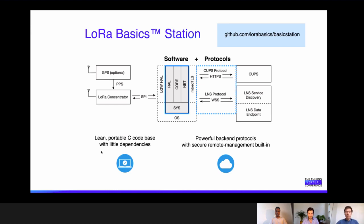Here we see an architecture diagram of how the Basic Station software fits into the picture. Reading left to right, we have the antenna and radio front-end hardware on the far left. Over SPI, this hardware is driven by a host platform, which in most cases is a Linux-based system. However, there is a clear trend toward miniaturization, with more gateways based on tiny real-time operating systems with very little resources. Basic Station is the software that runs on this OS and communicates via the LoRa gateway HAL library — also supported and supplied by Semtech — over SPI to the hardware.